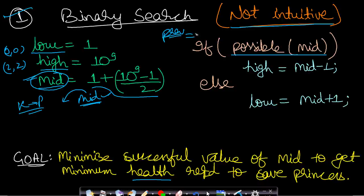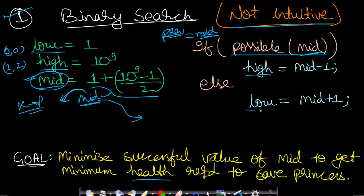Whenever it is possible to reach the princess using the mid value, we save it in a 'previous' variable storing mid. Then we search for lower values by setting high = mid - 1. If there is no path using health equal to mid, we must search higher values, so we set low = mid + 1. Whatever is stored in the previous variable will be our result — the minimum health to reach the princess.